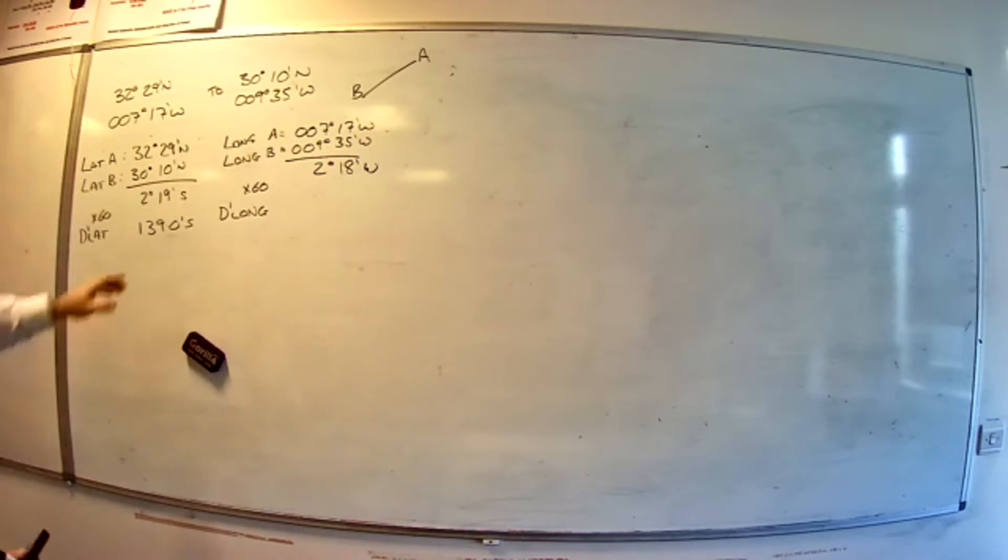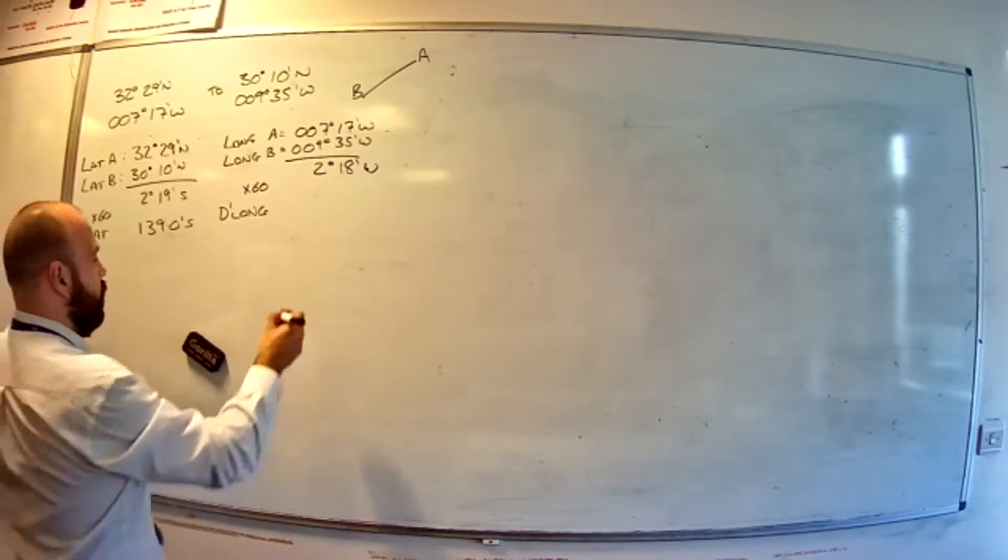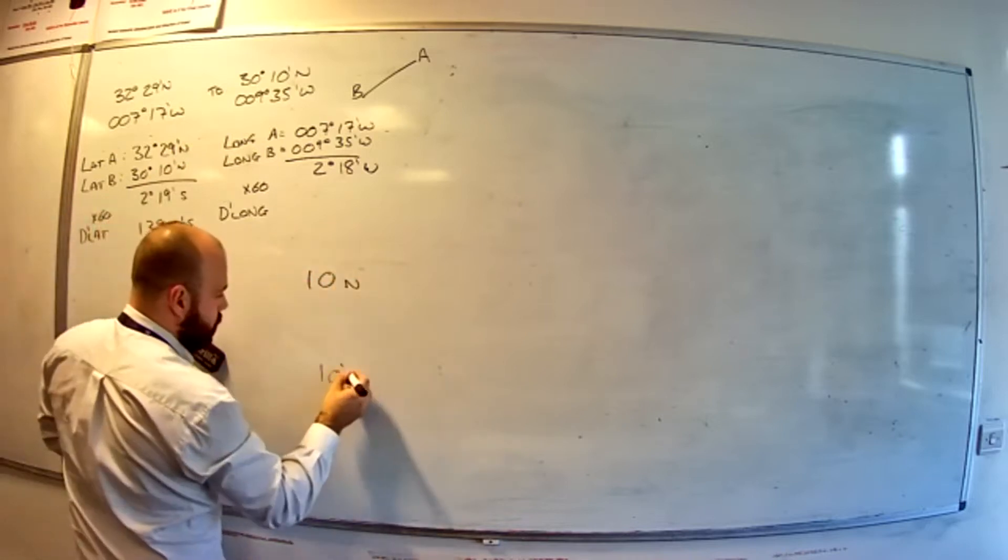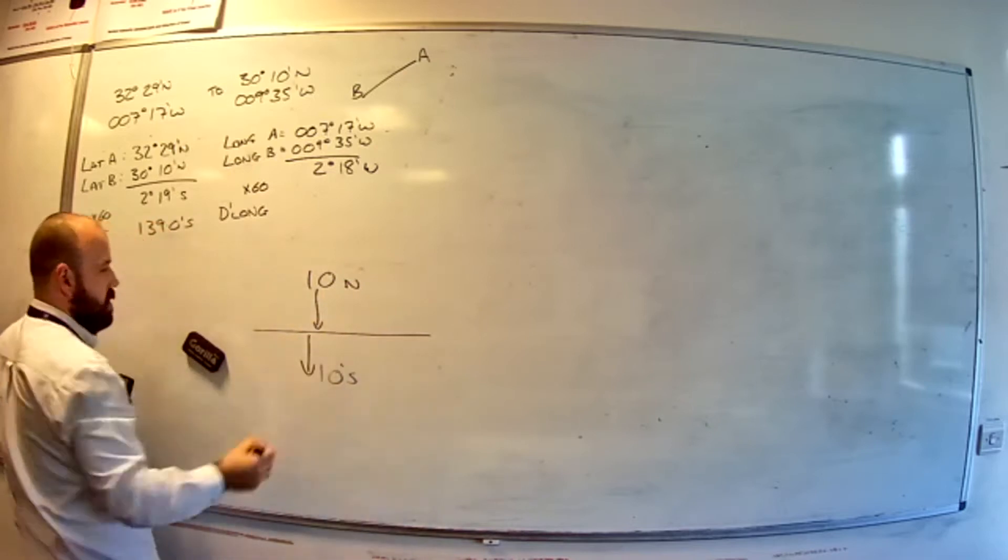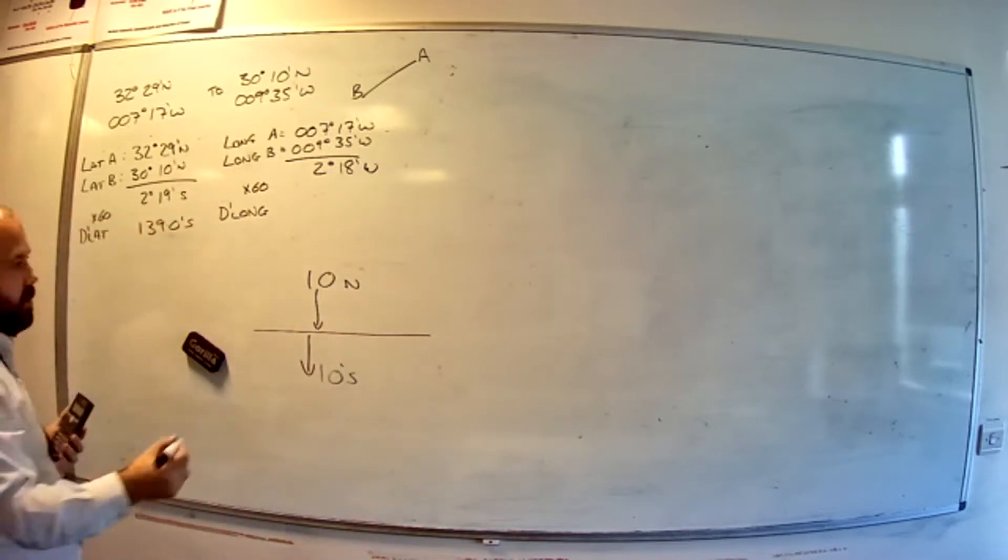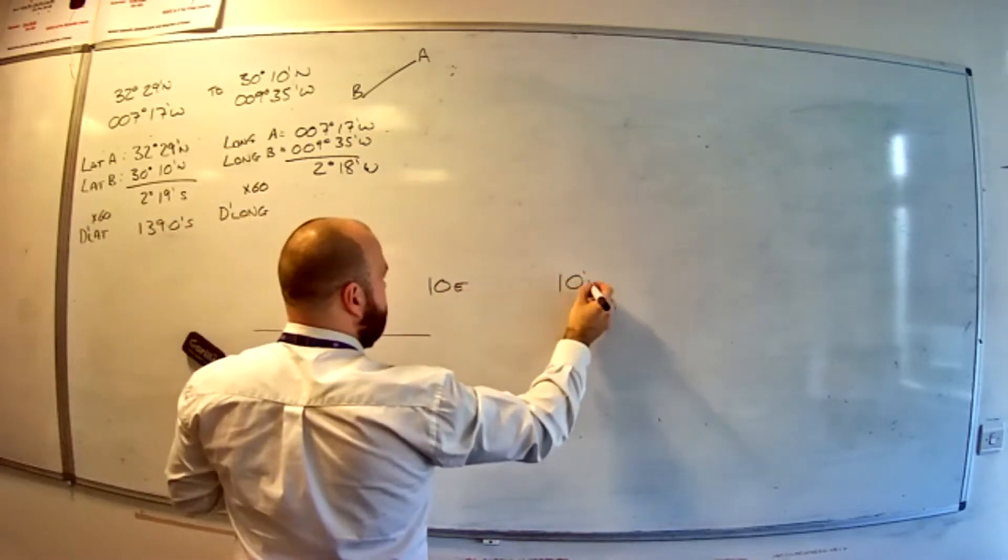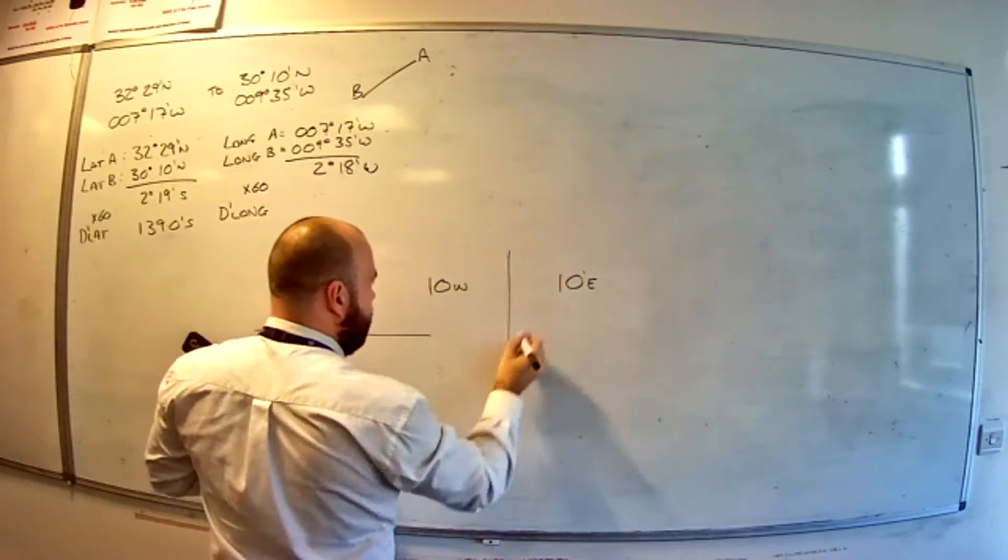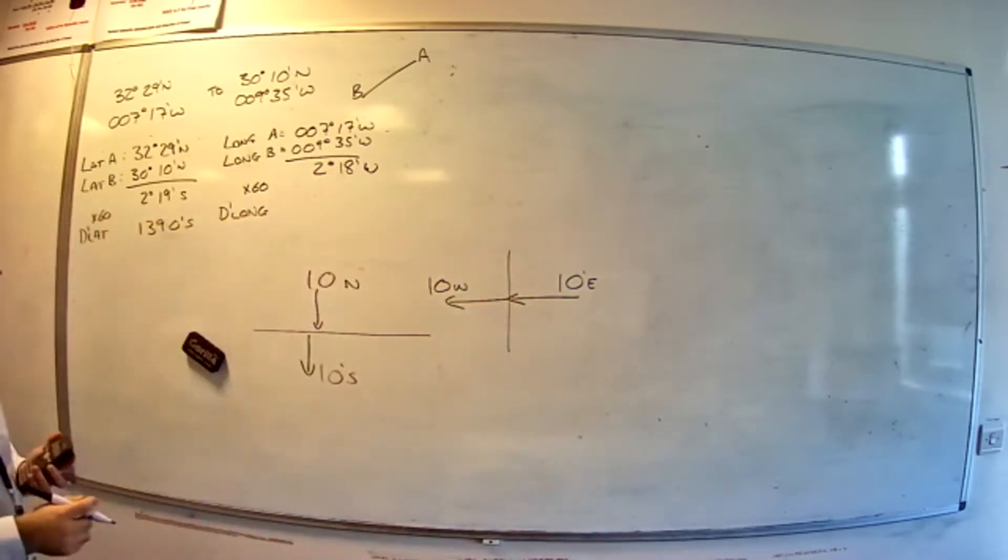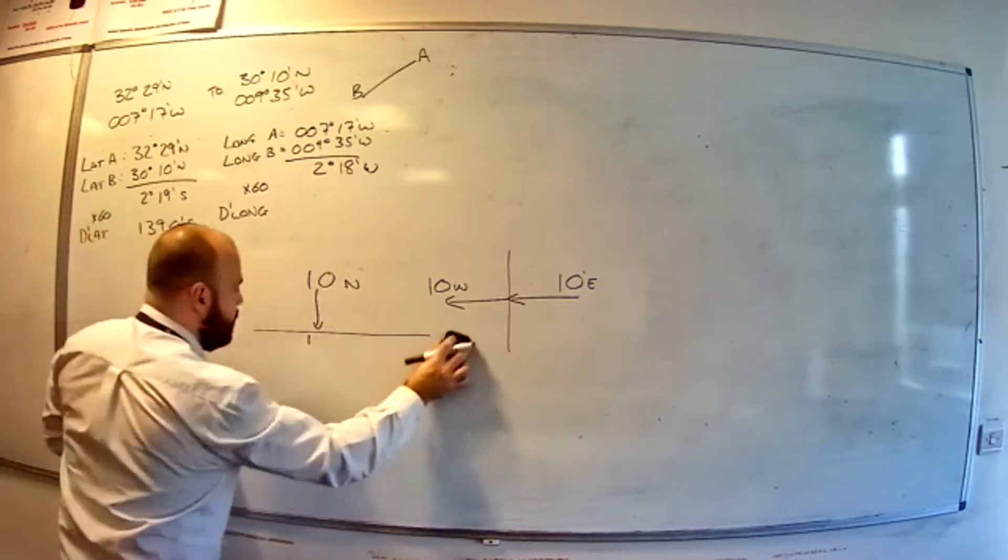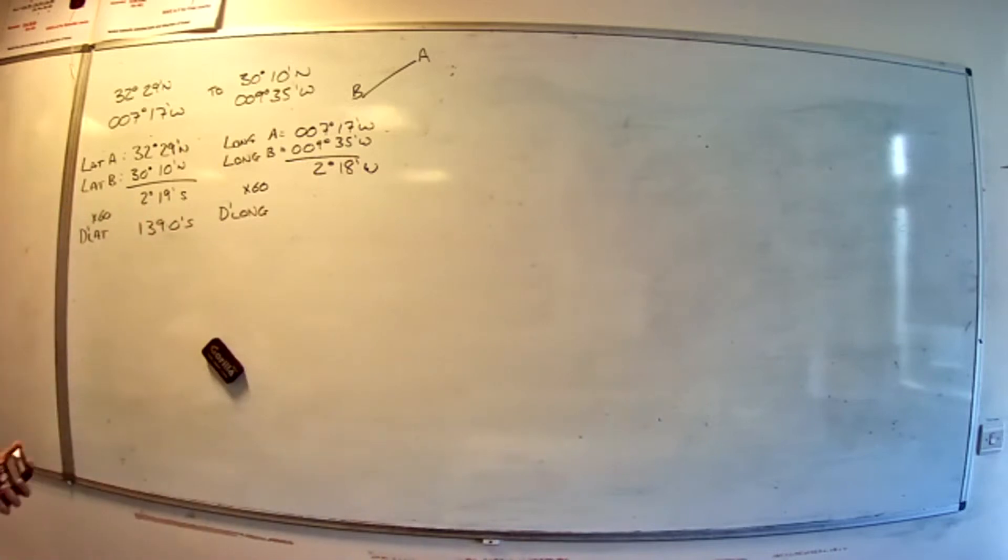If you were changing hemispheres, so north to south, you would add them to get the difference because you'd need to go, say you're going from 10 north to 10 south. You'd have to go 10 degrees down to the equator, then another 10 degrees down to get to where you're going. Similarly, if you were going from 10 east to 10 west, or vice versa, you'd have to go 10 degrees to the Greenwich Meridian and another 10 degrees to where you're going. So different names you add, same names you subtract.